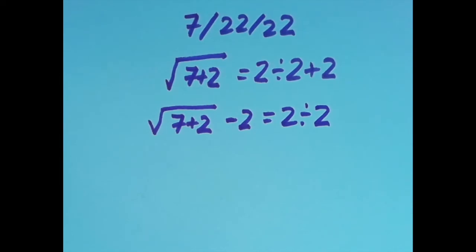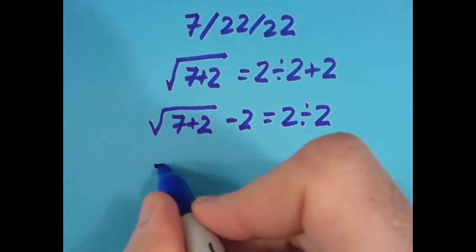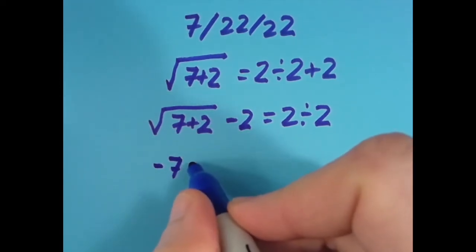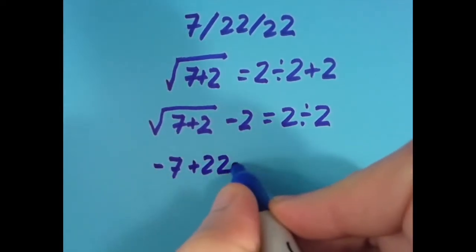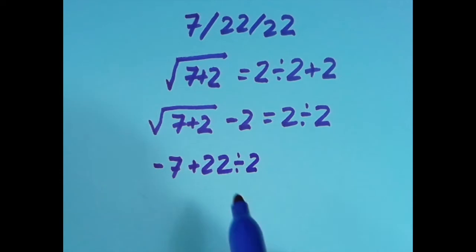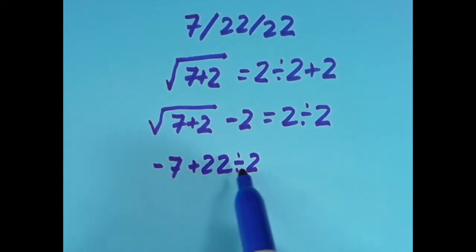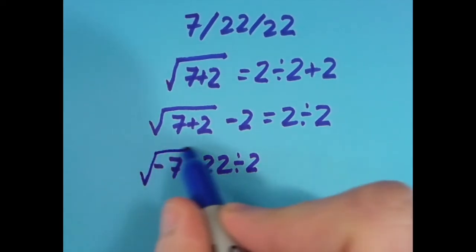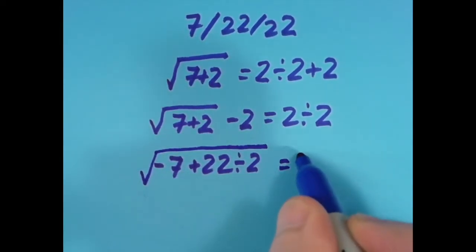I tried it again with the equal sign all the way over to the right, and for this one what I said was negative 7 plus 22 divided by 2. So we do our division first, 22 divided by 2 is 11, negative 7 plus 11 is 4, and the square root of 4, that's going to equal 2.